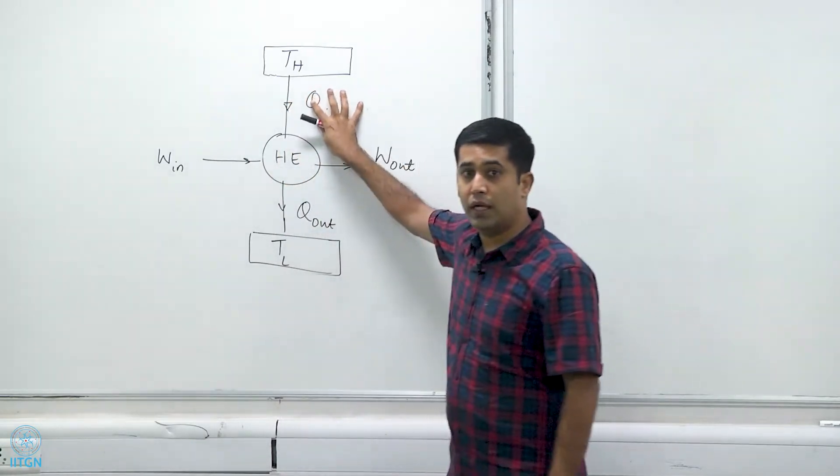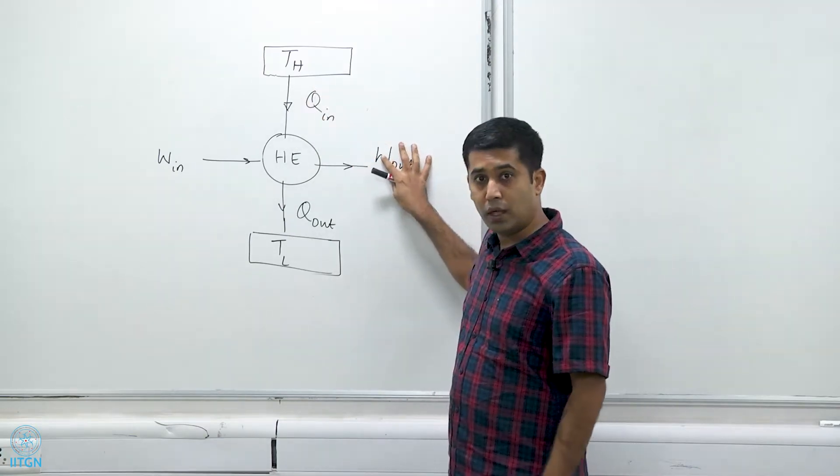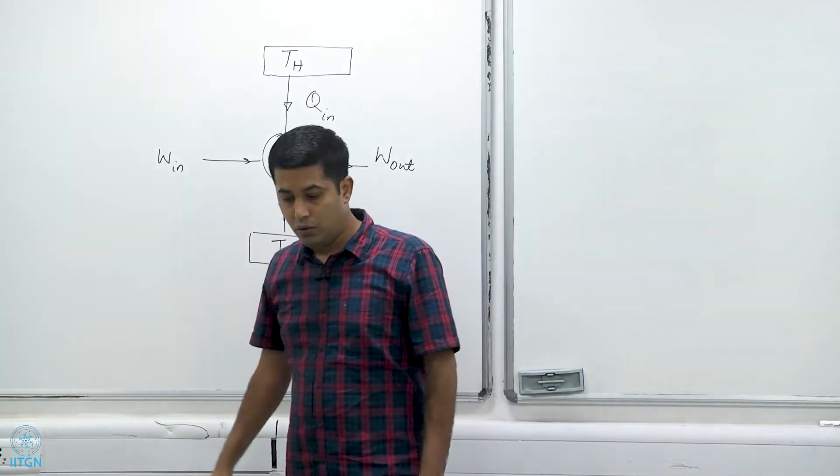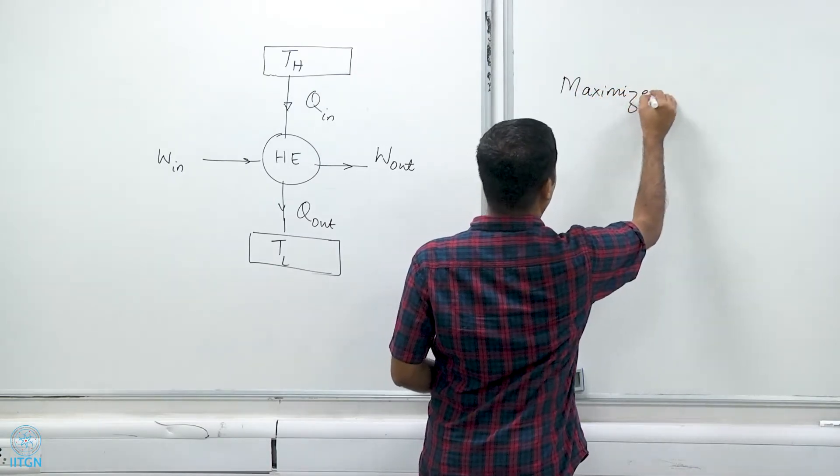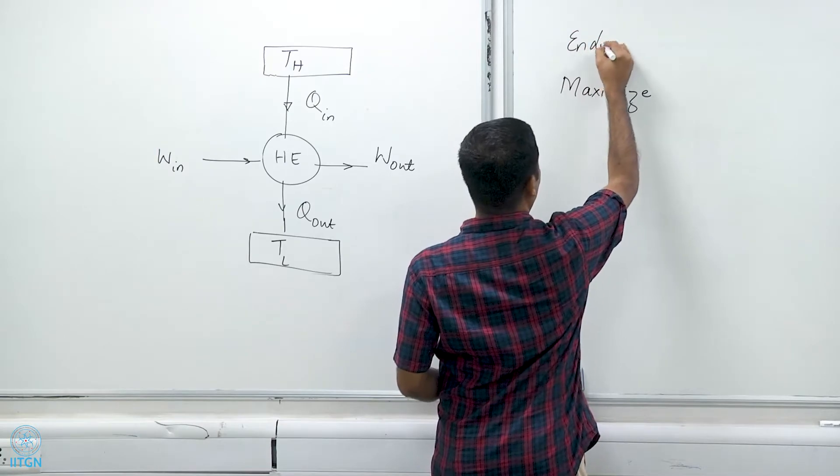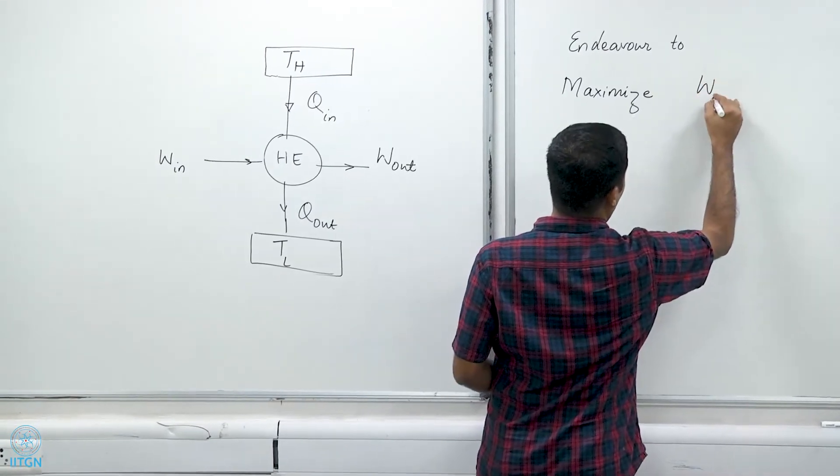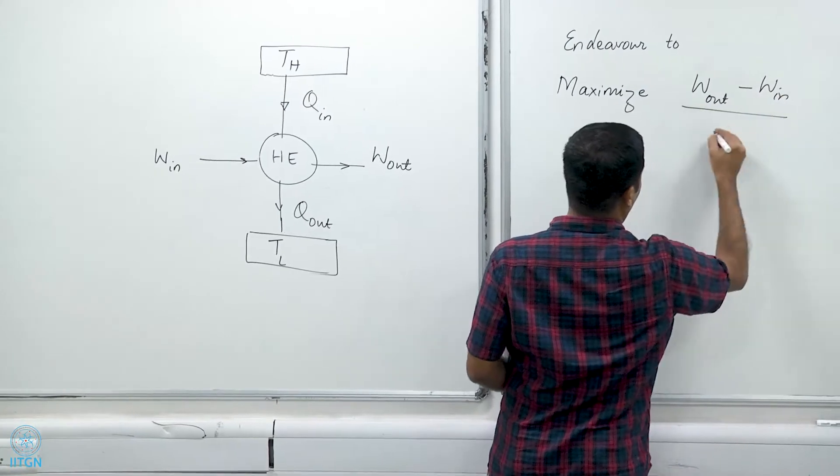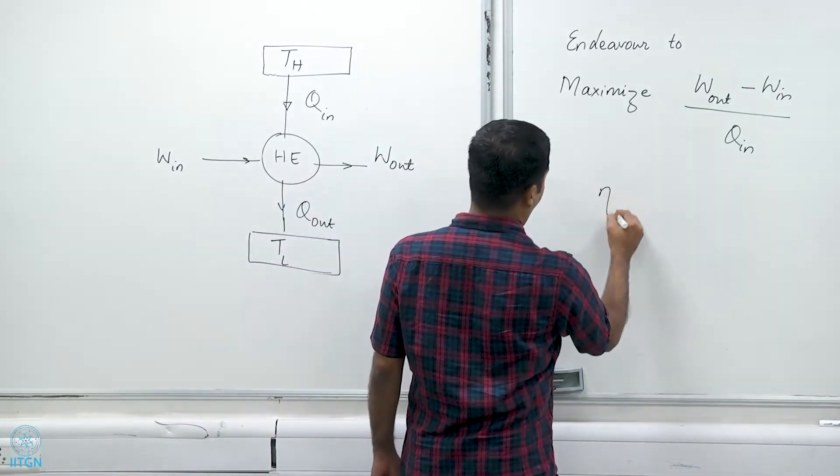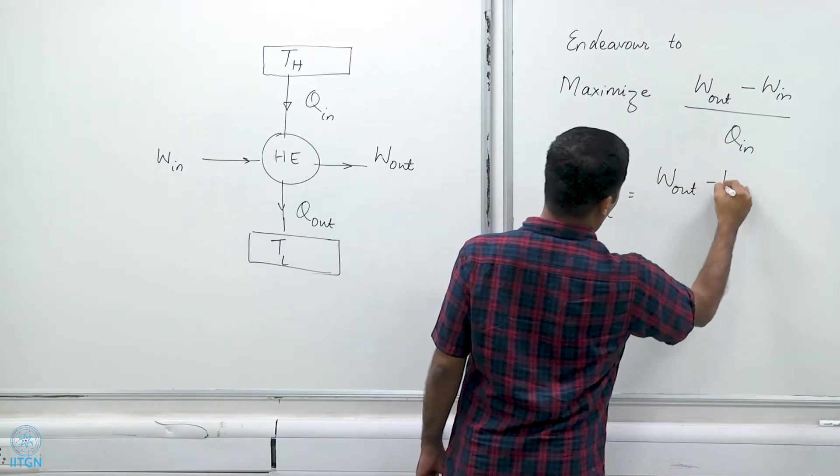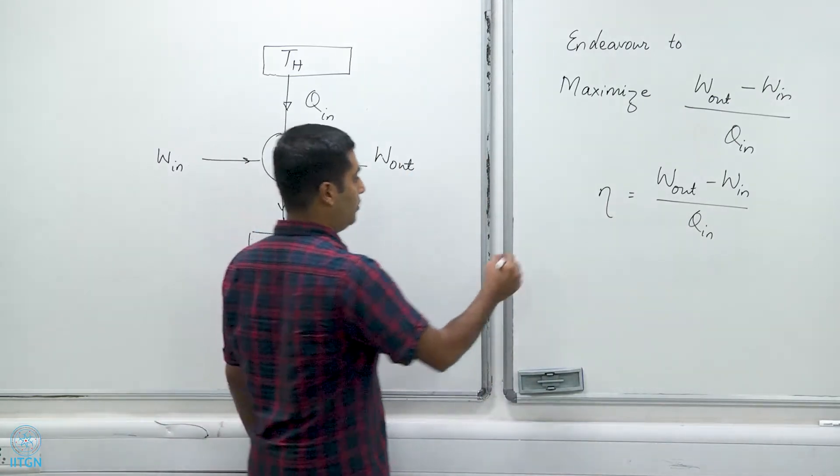What we need a heat engine to do is to convert most of this Q_in. If it were up to us we would like to convert 100 percent of Q_in to W_out and of course minimize W_in. What we want is to maximize W_out minus W_in divided by Q_in, and this is therefore also the definition of the thermal efficiency of a heat engine: η = (W_out - W_in) / Q_in.